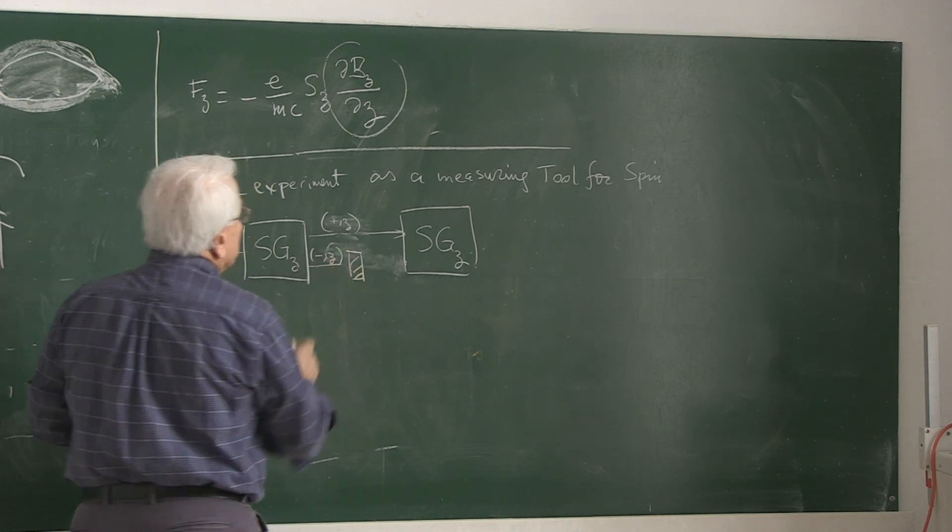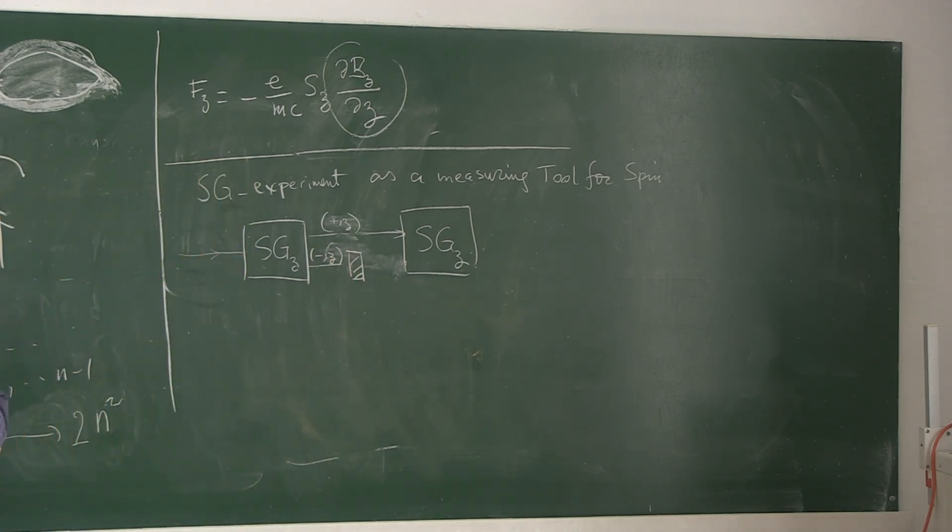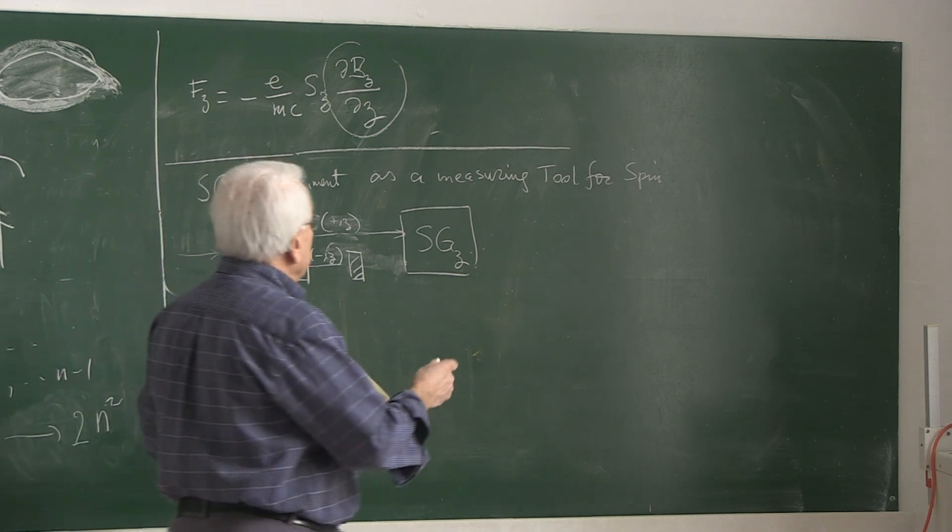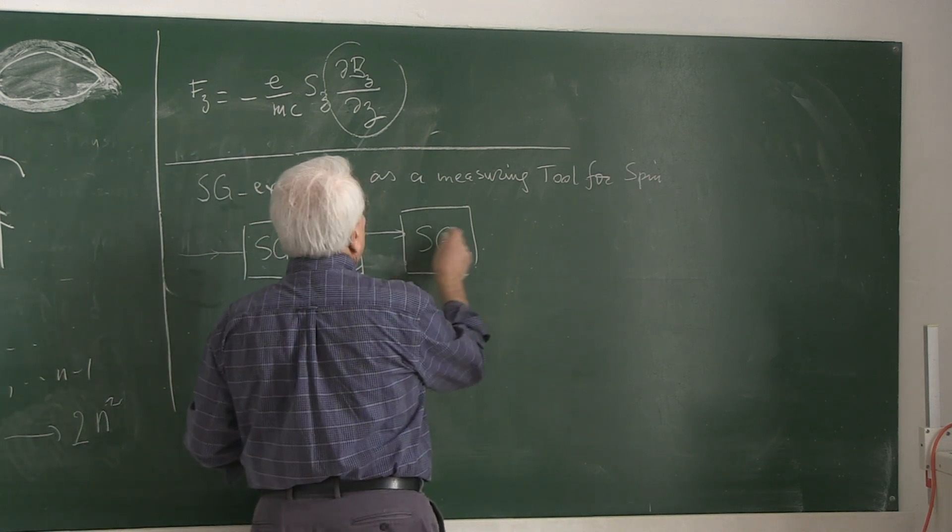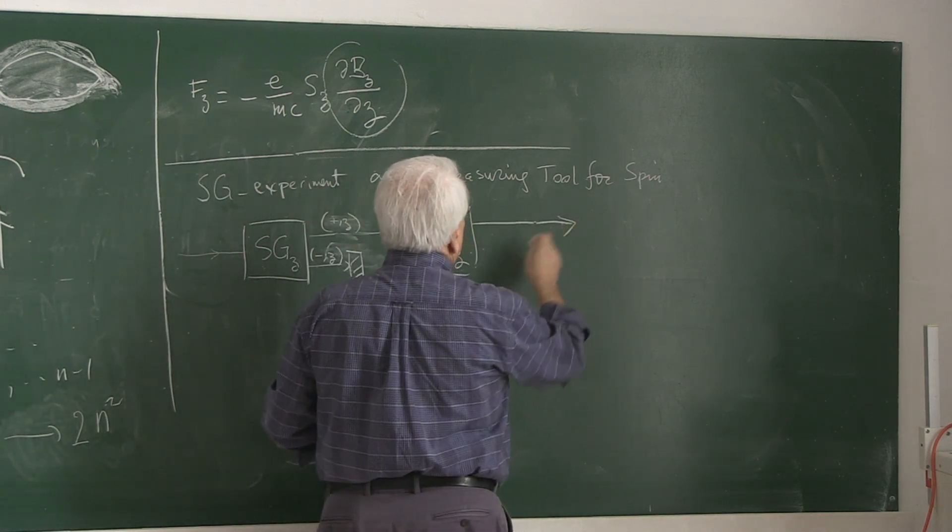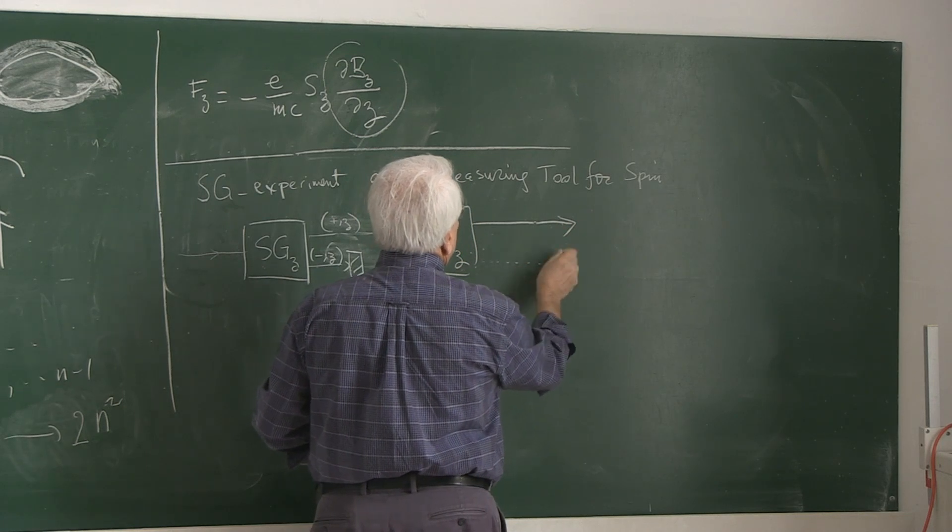So you don't let any of those, but it's easy to arrange this setup. You block the spin-down beam and you let only the spin-up beam go through. Again, go through the Z type of Stern-Gerlach gadget. This magnet is in the Z direction.